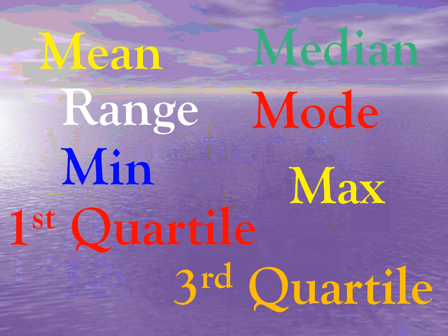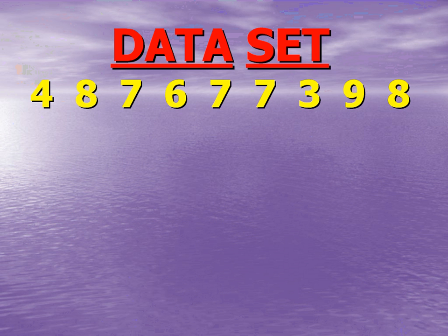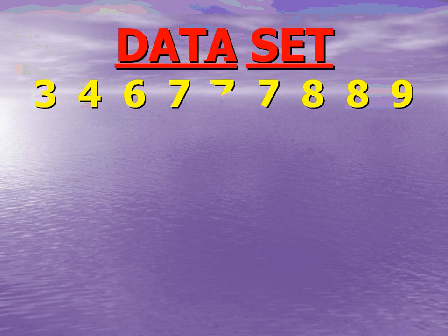I'm going to give you a data set, and using that data set we are going to identify these eight values. First, you need a data set. There are always two things you need to do with every single data set. First, count how many pieces of data you have — I get nine pieces of data. My second step is to put that data in order from smallest to largest, then count again to make sure you have the same number you started with. This is a big mistake with seventh and eighth grade math — students either miss a number or add one too many, and as a result all your data tends to be wrong. This is a mistake that is very easy to correct.